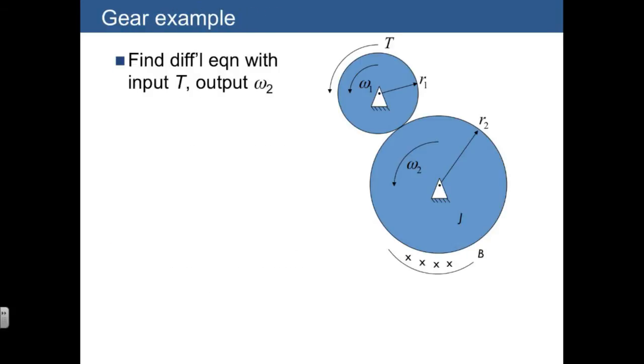So let's do an example. Here we have two rotational gears. And we don't show the gear teeth, but we're going to understand that when we show this there's rolling without slipping between the two sides of the gear. We're going to apply a torque on one gear, and then we're going to have a damper on the other gear.